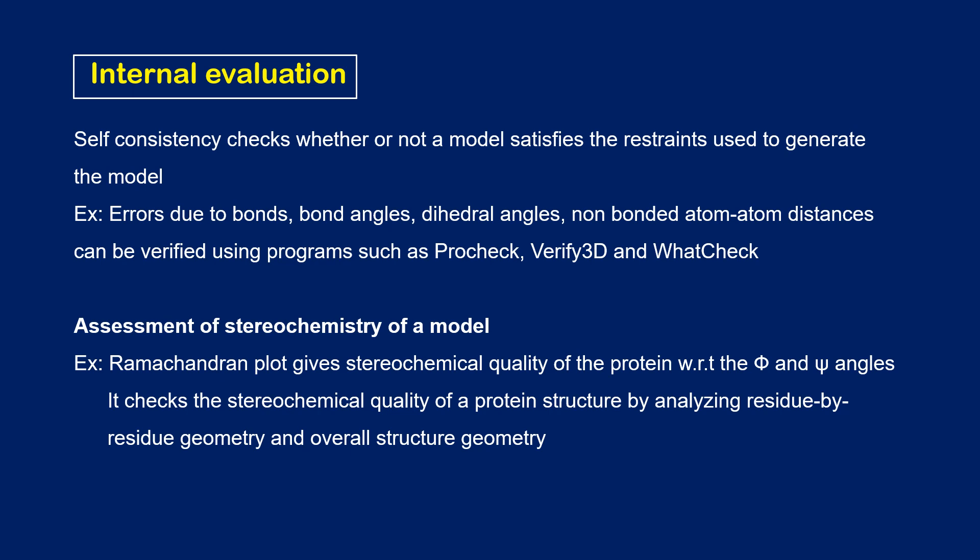In internal evaluation, self-consistency checks are done to verify whether the model satisfies the restraints used to generate it. Each model is generated using certain spatial restraints, and errors in these restraints can be checked using internal evaluation — for example, errors arising from bonds, bond angles, differences in dihedral angles, and non-bonded atom-atom distances. These can be verified using programs such as ProCheck, Verify3D, and WhatCheck. Assessment of stereochemistry is done using the Ramachandran plot, which gives the stereochemical quality with respect to phi and psi angles, analyzing residue-by-residue geometry.